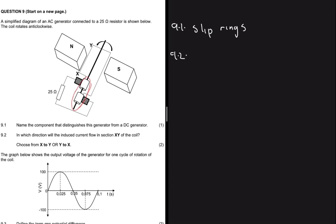Question 9.2 says in which direction will the induced current flow in section XY of the coil, choose from X to Y or Y to X. Here you have to use the left hand rule. With your left hand you're gonna point using your index finger from the north pole to the south pole because that's how the field moves, and then if you do that your middle finger will be pointing from Y to X, and that's the direction of the induced current.